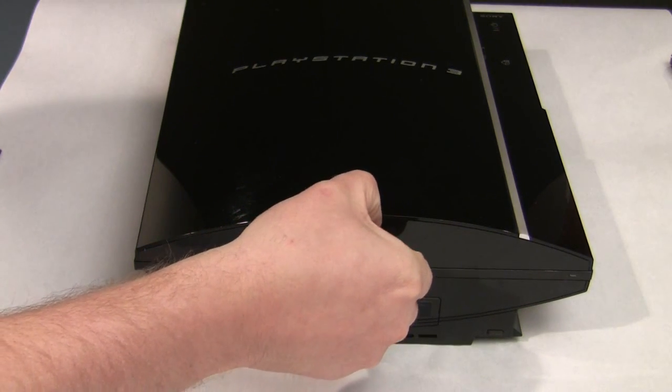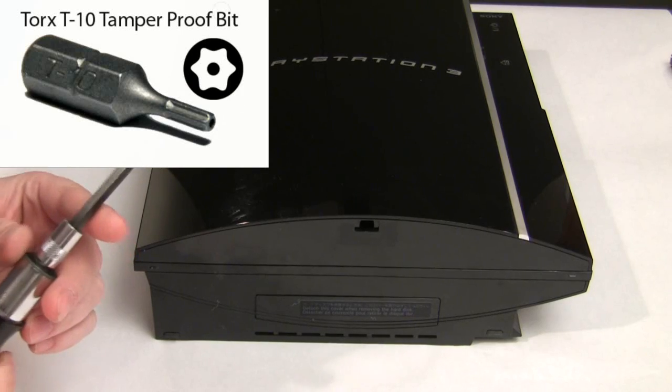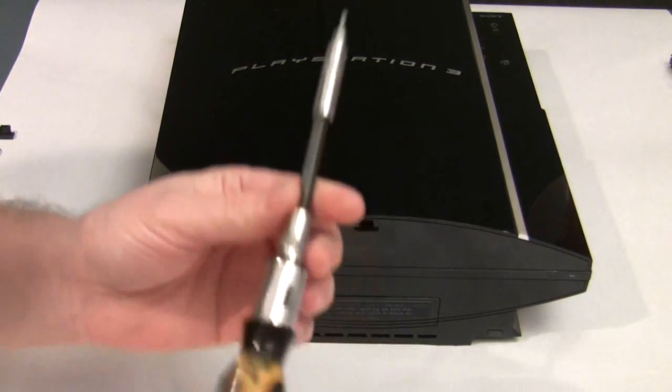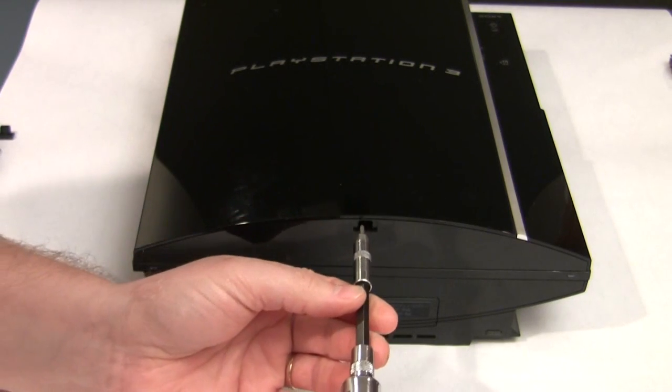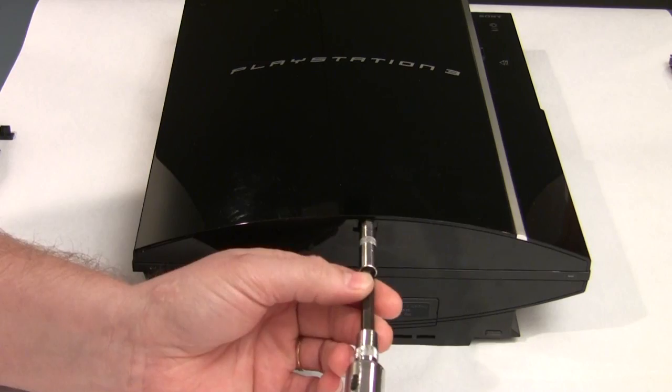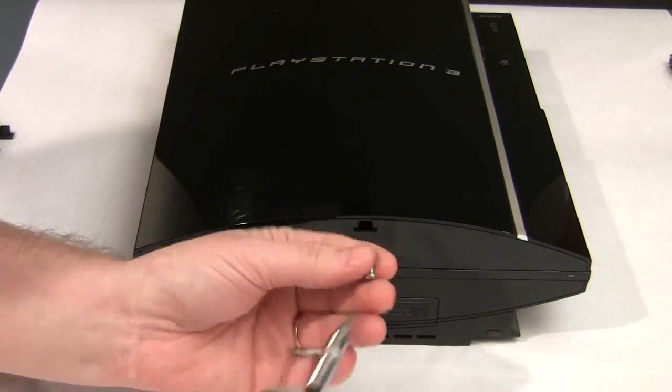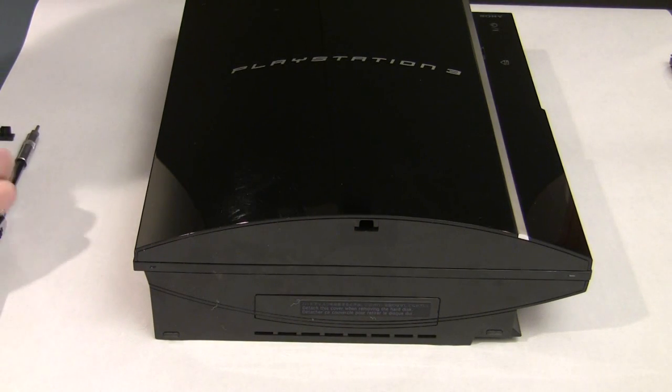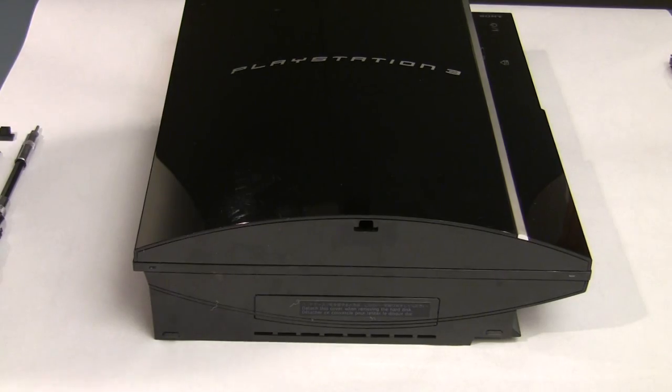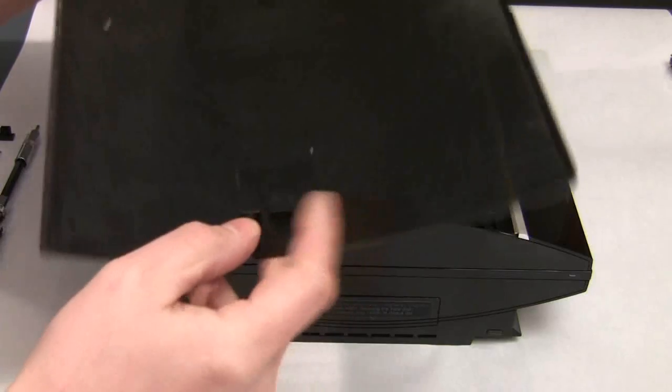Now we're going to remove the little rubber foot. And this gives us access to the security screw. Now you're going to use a Torx 10 security bit. And I had to put an adapter on here because it wasn't quite long enough to reach in there. Our security screw. That's the only screw that you need to worry about that's a security screw. The rest of them are all going to be Phillips head. Slide the top off just like so. And put that off to the side.